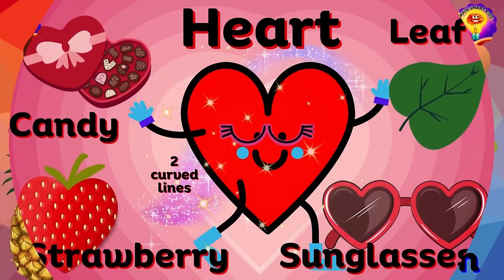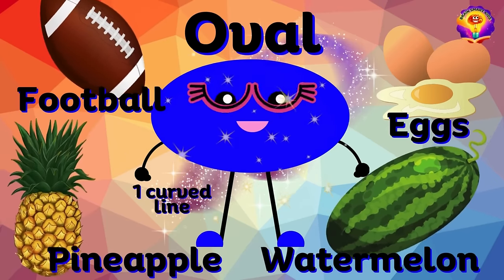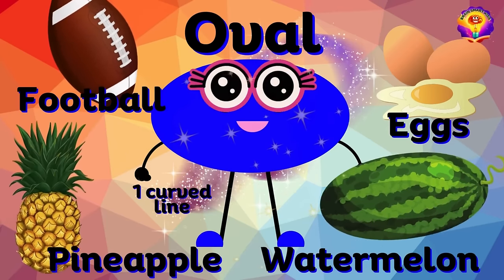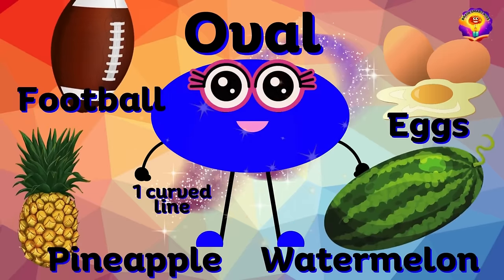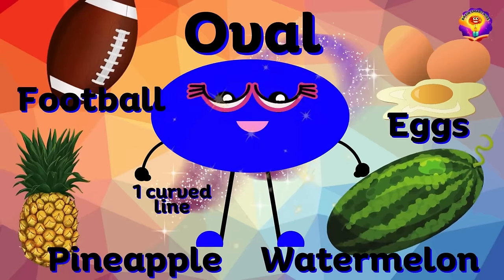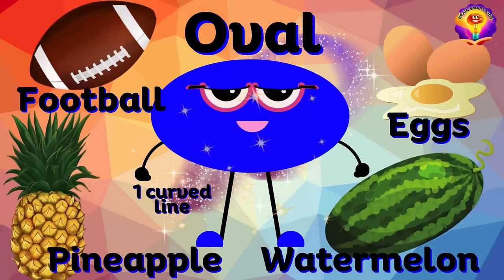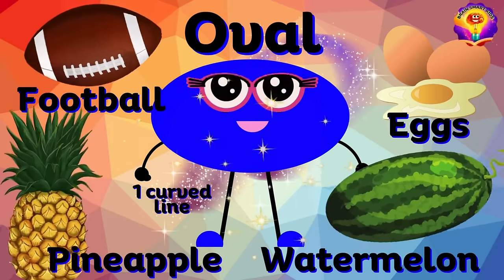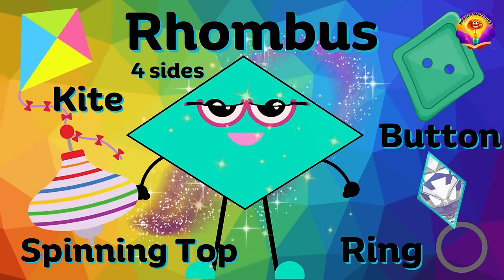Oval. O-V-A-L. An oval has one curved line. Football, pineapple, watermelon, eggs. Oval.